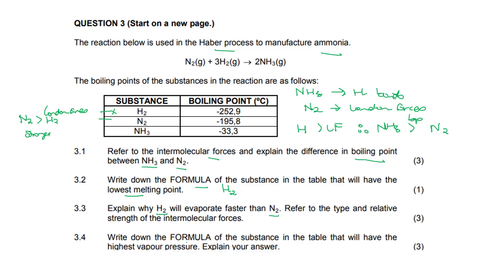3.4, write the formula of the substance in the table that will have the highest vapor pressure and explain your answer. The highest vapor pressure is the one with the lowest boiling point, so again, that is hydrogen. You get a mark for stating the formula, then two marks for your reasoning. The one with the lowest boiling point will have the highest vapor pressure, and hydrogen also has the weakest intermolecular forces — London forces — which explains why it has the highest vapor pressure.